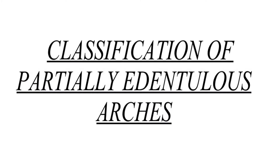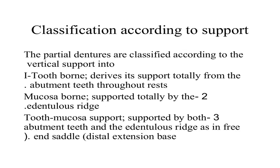Classification of partially edentulous arches. Classification according to support: partial dentures are classified according to vertical support into: 1. Tooth-borne — derives its support totally from the abutment teeth through rests. 2. Mucosa-borne — supported totally by the edentulous ridge. 3. Tooth-mucosa support — supported by both abutment teeth and the edentulous ridge, as in free-end saddle distal extension base.